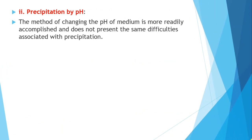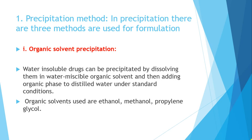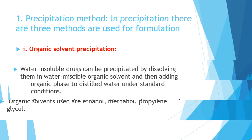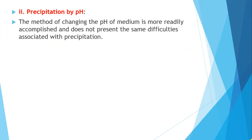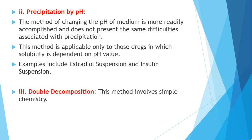In this class we have seen the first method — the precipitation method — which includes organic solvent precipitation, precipitation by pH, and double decomposition. This is all about today's class. Thank you for fully watching this video. Happy learning, stay safe.